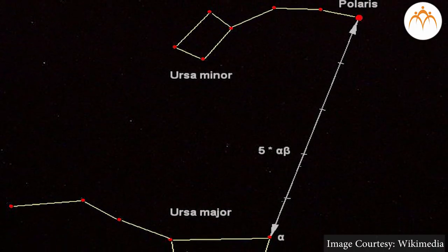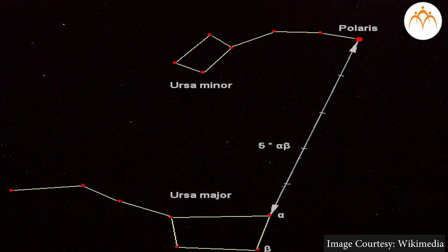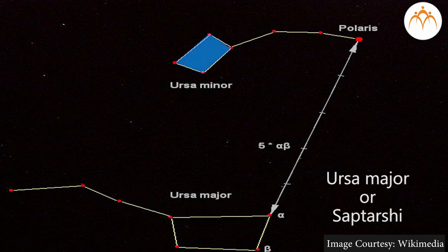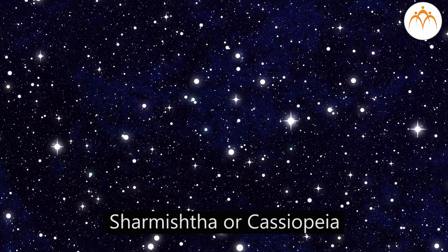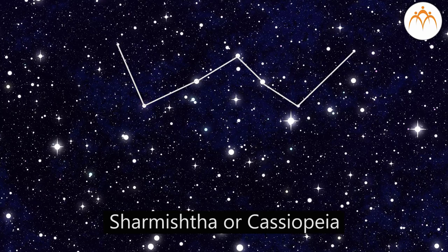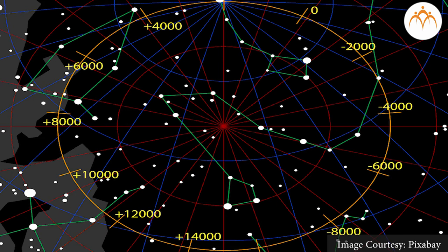Ursa Major, or Saptarshi: It is a group of stars which show a structure like a kite with a tail. It is also called the Great Bear. The two pointer stars mark the direction of the pole star. Sharmishtha, or Cassiopeia: It is a group of five stars which look like M or W. The perpendicular bisector joining the third and fourth stars points to the pole star. The pole star is very important while studying stars as its position is fixed just above the earth's axis of rotation, making it a good reference point.